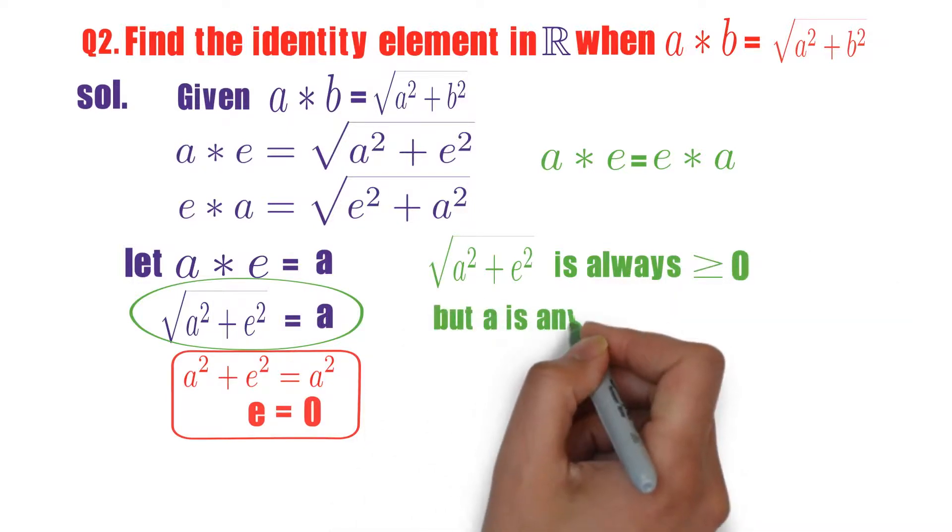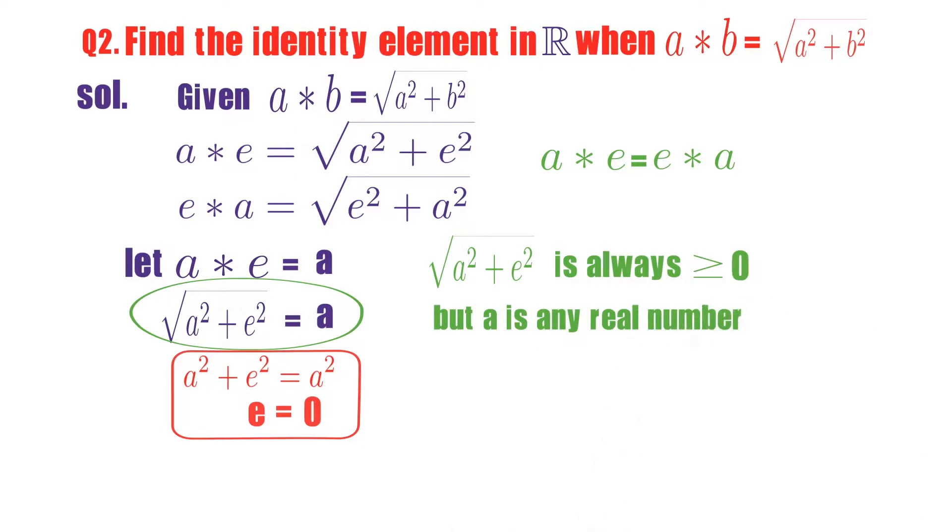And what is a? A is any real number. That means a may be negative real number also. LHS part is always giving positive. There is a chance that RHS part is giving negative number. There is a chance that a star e is not equals to a.